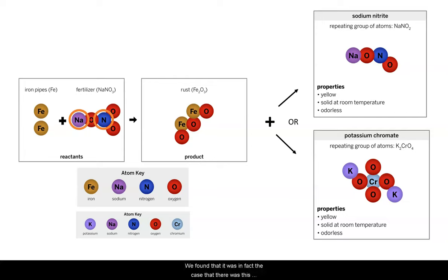And we found that there was in fact another substance in there. It was dissolved in the water so we couldn't see it. However, when we removed it from solution and dried it out, we found that it was a yellow powder that is odorless at room temperature.